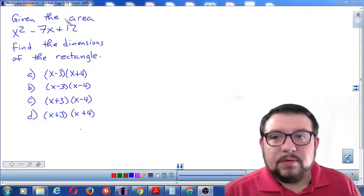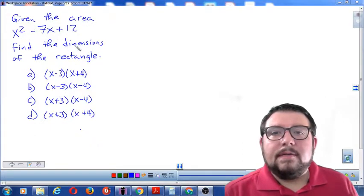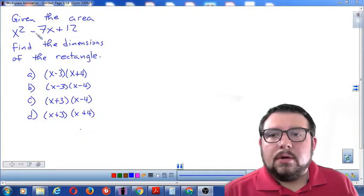Alright, today let's read the problem. Given the area of x squared minus 7x plus 12, find the dimensions of the rectangle.